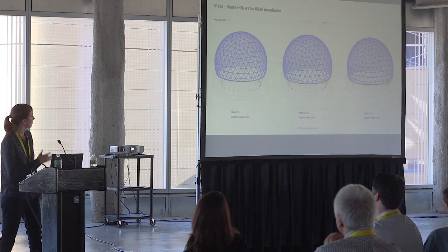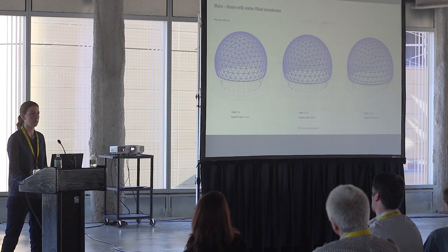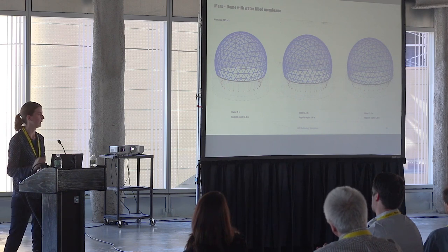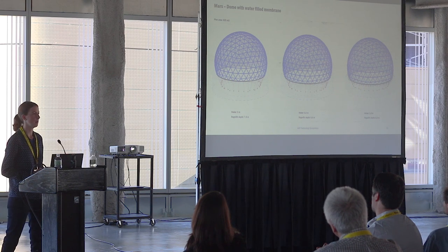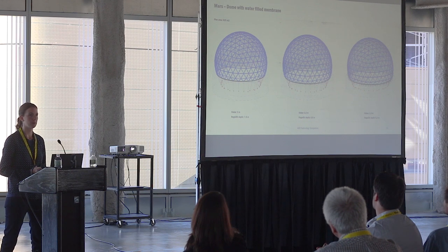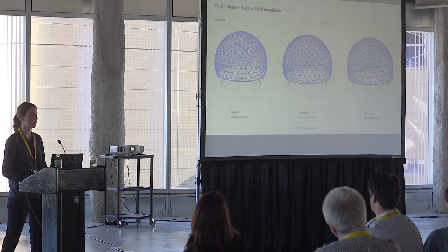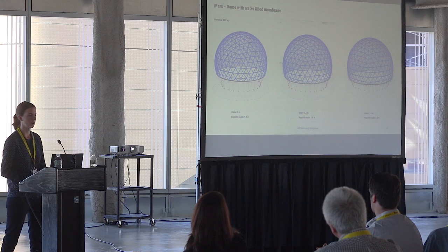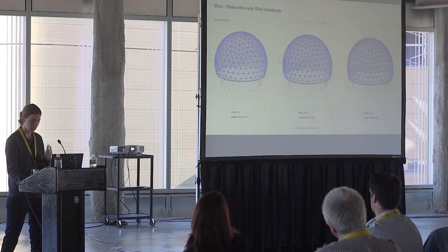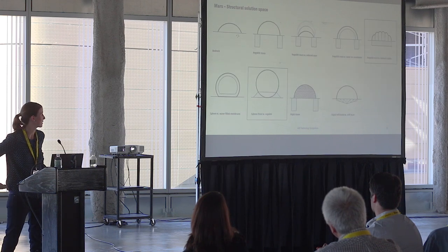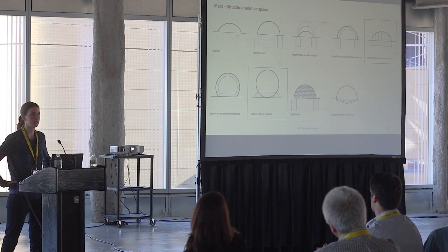I was then able to simulate what happens when we add mass to the membrane — in this case a double-skin membrane with water in between, which also helps with radiation. Adding one meter of water reduces the required regolith depth at the foundation by 2.5 meters, which is quite significant. In general, over a few weeks I went through a lot of simulations and solutions, and I wouldn't have been able to do that without this tool.